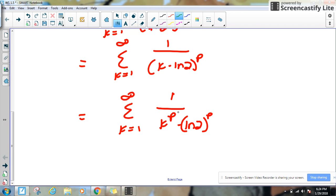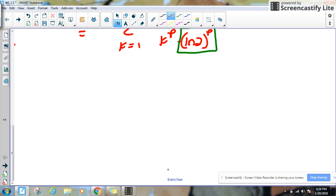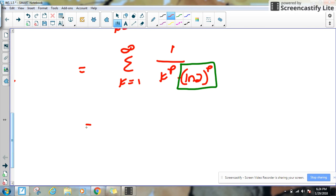But here's the cool thing. This natural log 2 raised to the p within the denominator is just a constant. So we can actually just remove it from the summation. You can always pull constants out of sums. So this is going to be 1 over the natural log of 2 raised to the p times the sum of k equals 1 to infinity of 1 over k to the p.